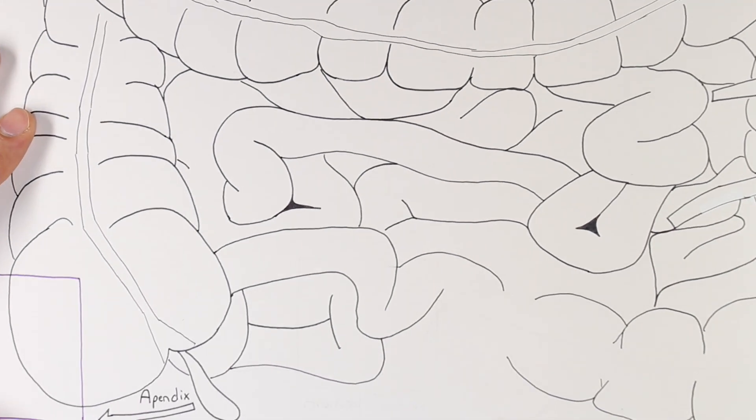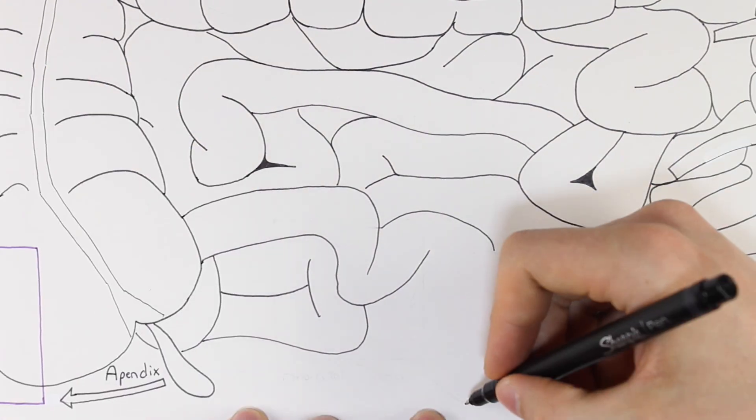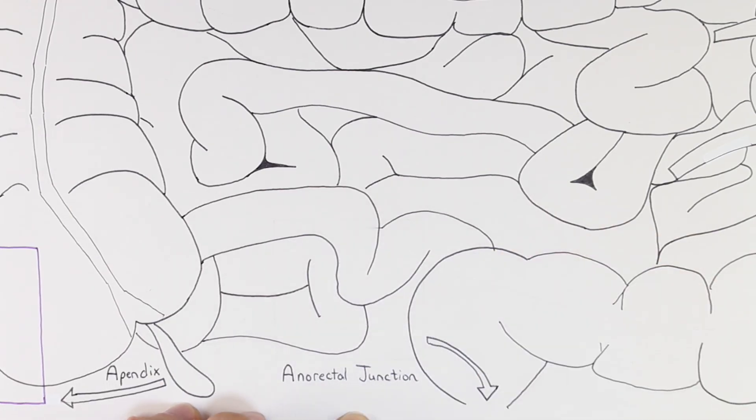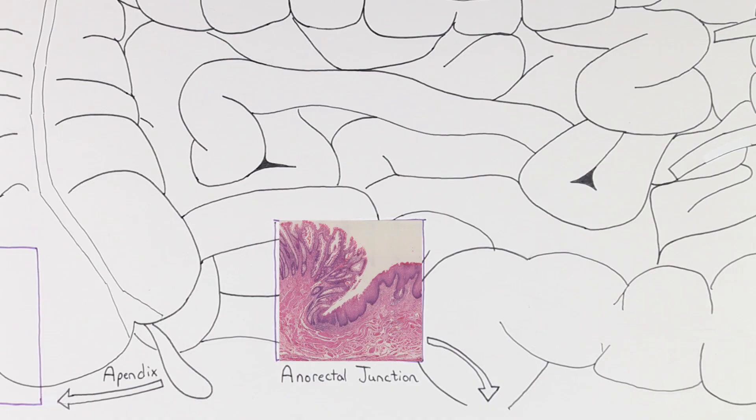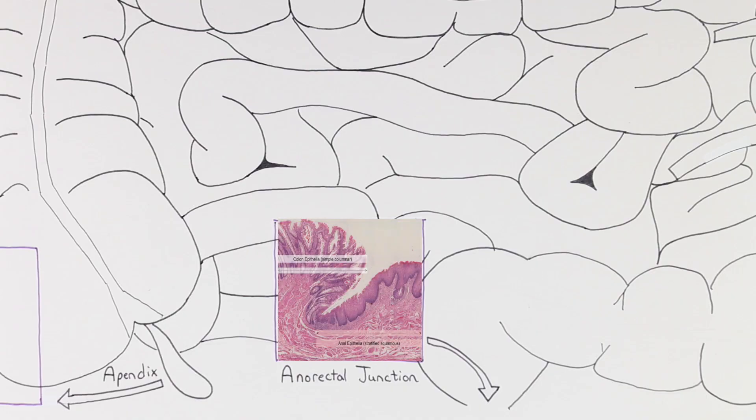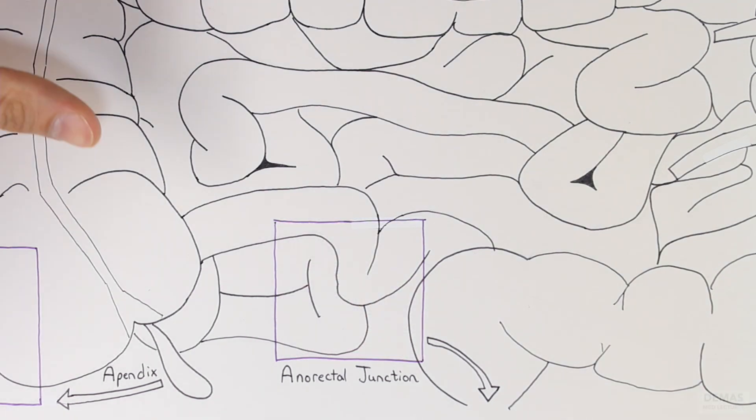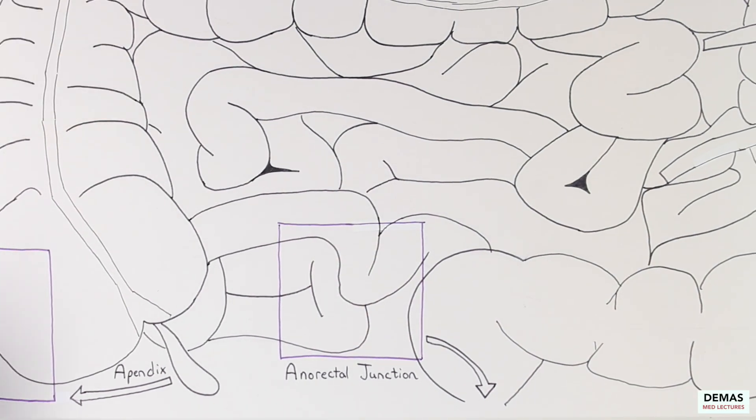The last part of the gastrointestinal tract that I'd like to point out is the anorectal junction. Take a look at this picture and see if you can decide which side is the colon and which side is the rectum. As you may have guessed, the end of the colon is on the left with the columnar cells and goblet cells. On the right is the stratified squamous epithelium of the anus. This structure mirrors what we saw at the beginning of the tract at the gastroesophageal junction. Shortly after the anorectal junction, the stool is eliminated from the GI tract.